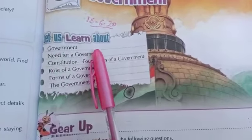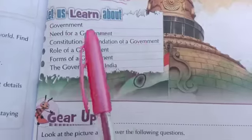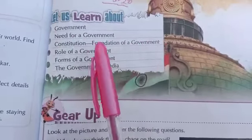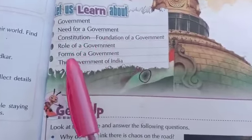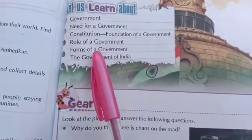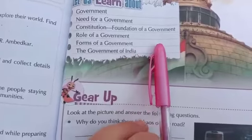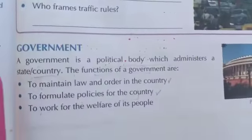In this chapter we will cover: What is the need for a government? What is the constitution and foundation of a government? What is the role of a government? How many forms of government are there? And the Government of India.